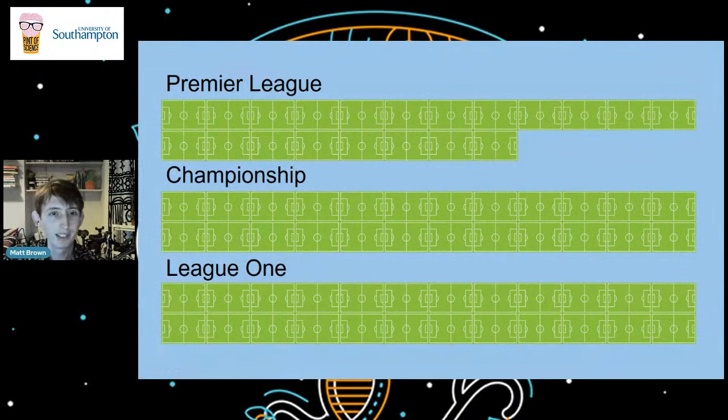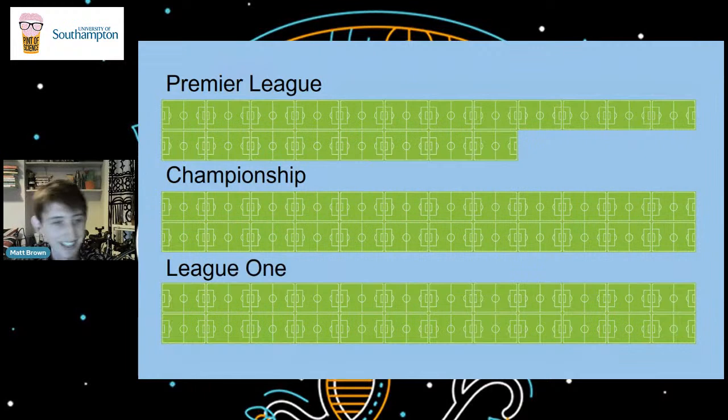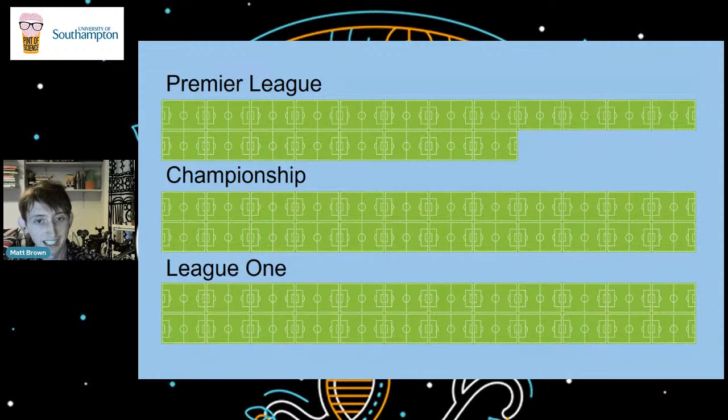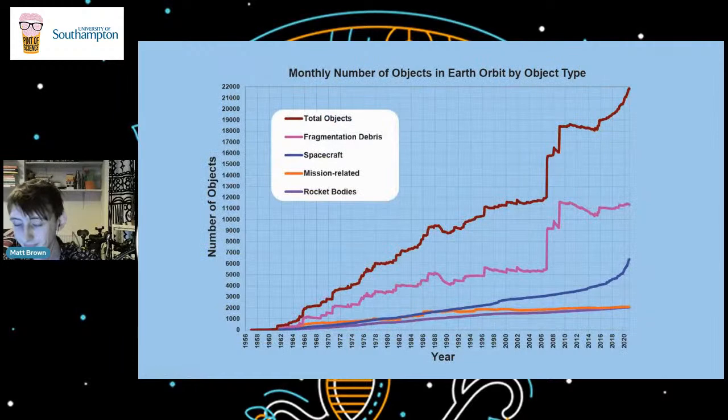These things are traveling incredibly quickly around the Earth. If you lined up all the football pitches of the Premier League, Championship, and League One in a massive row, debris would cover that distance in less than a second. These objects travel at 10 times the speed of a bullet — around seven to eight kilometers per second. That means when they hit something, they absolutely pulverize it and create masses more space debris.